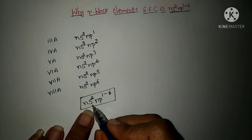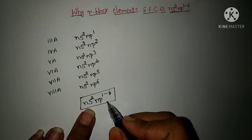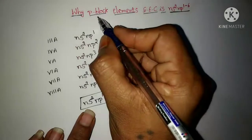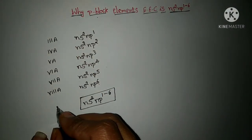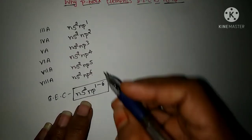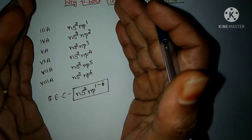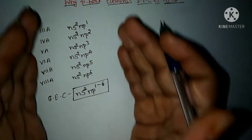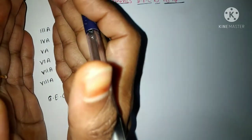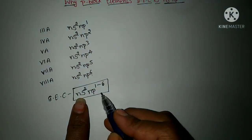Now students, have you understood how this NS2 NP1 to 6 general electronic configuration came for P block? So now this is the general electronic configuration, and it is common — it is related to all the groups which are present in the P block. So: NS2, NP1 to 6.